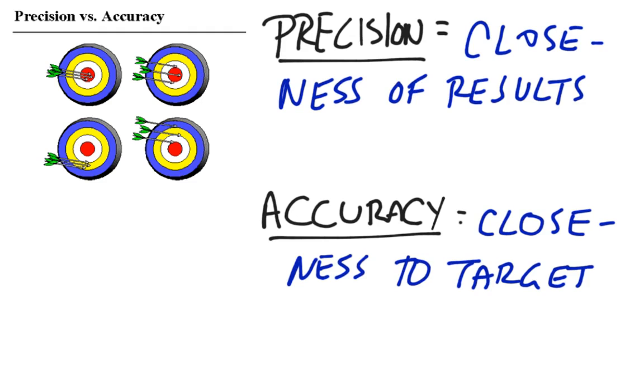Precision, however, is how close your results are to each other. Let's say every time you took a test you end up with 87 percent. You'd be considered a very precise test taker. If your goal was 100 percent and you end up with 87 every time, that's not necessarily what you're looking for, but it's not too far away.